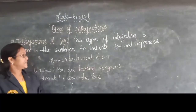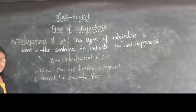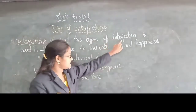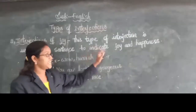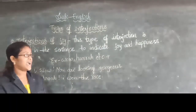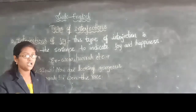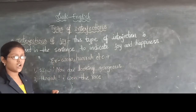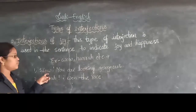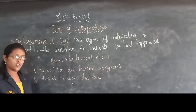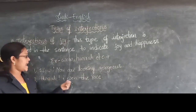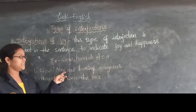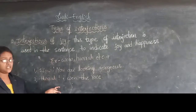Now we are going to learn our second type of interjection, that is interjections of joy. This type of interjection is used in the sentence to indicate joy and happiness. Whenever we are indicating joy and happiness, we use interjections of joy. Examples are wow, hooray, etc. See the sentences: Wow, you are looking gorgeous. Hooray, I won the prize. These two sentences indicate happiness and joy.